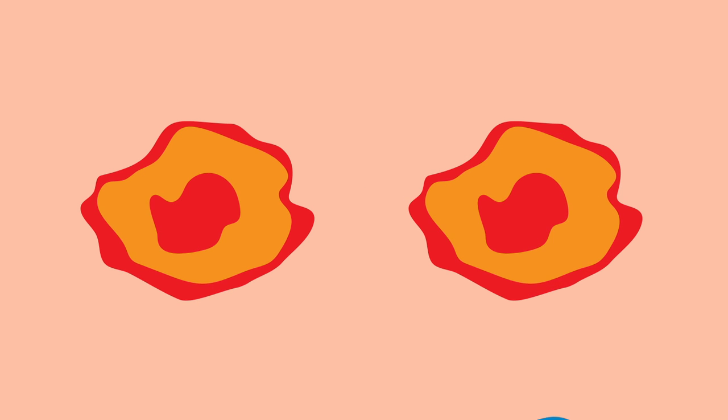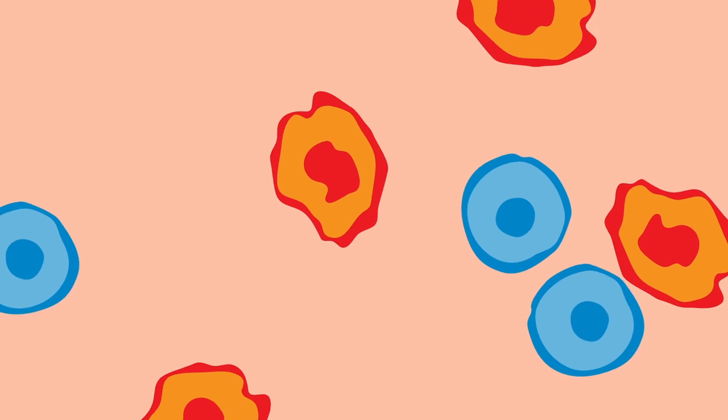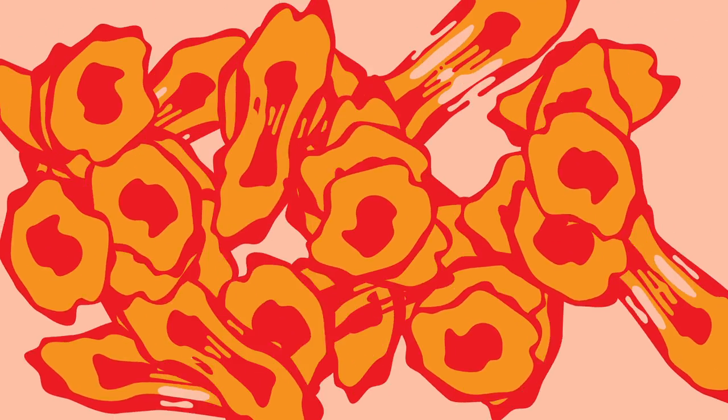Sometimes this process breaks down, and dividing cells acquire DNA variants that may cause them to grow abnormally. This growth can lead to cancer. Cancer is a disease that results when some cells in our body lose important functions, causing those cells to grow out of control and often cluster in cell masses, sometimes called tumors.